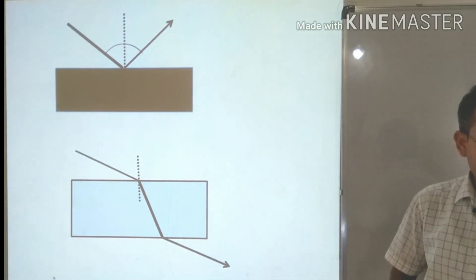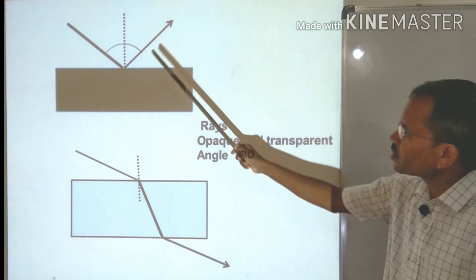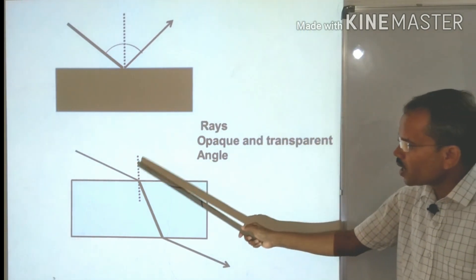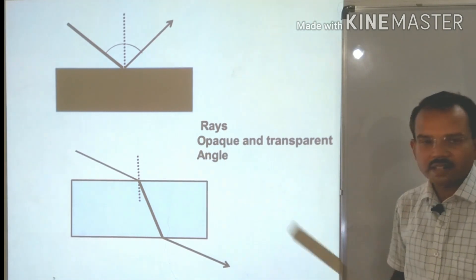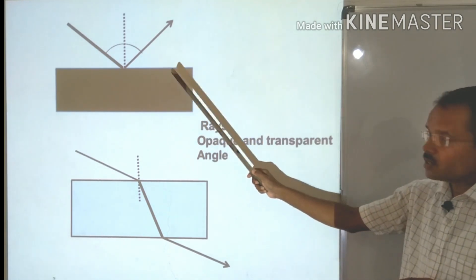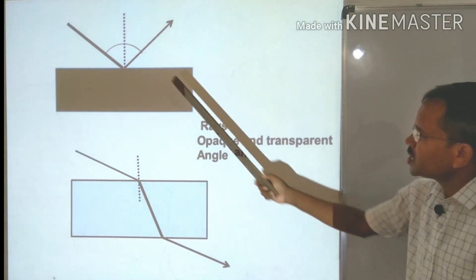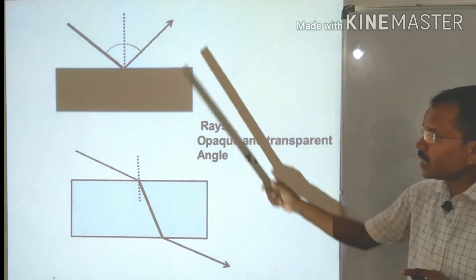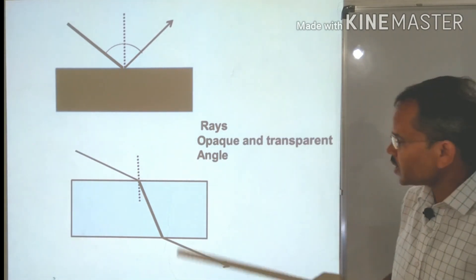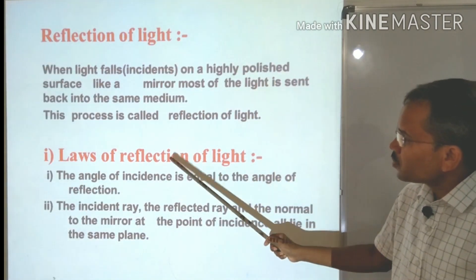Now let us look at the differences between reflection and refraction. First, regarding the rays: in reflection, the incident ray and reflected ray are in the same medium, while in refraction the incident ray and refracted ray are in different media. Second, in reflection an opaque medium is required, while in refraction a transparent medium is required. Third, in reflection the angle of incidence equals the angle of reflection, whereas in refraction these angles are different.